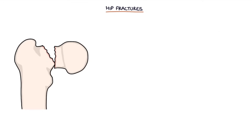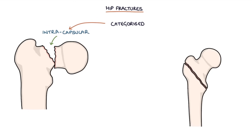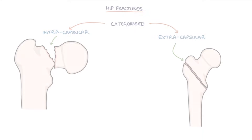A very important aspect of hip fractures is that they can be categorised into intracapsular fractures and extracapsular fractures. Let's start by talking about some basic anatomy.